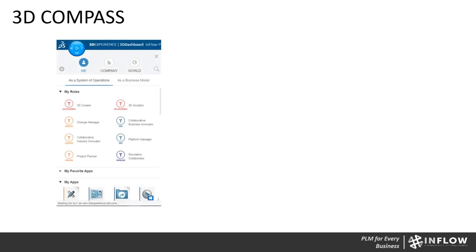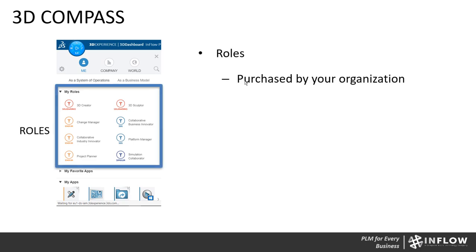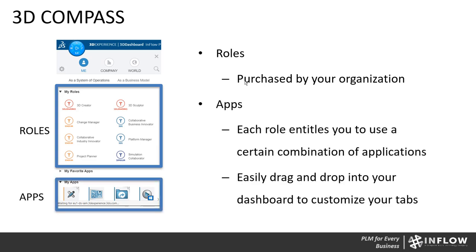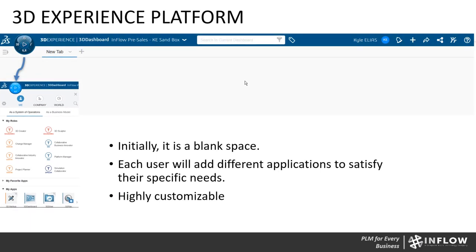I want to talk about the 3D Compass next. When you click on it — it sits in the top left-hand corner of the screen — it will show things like your roles. Your roles are what you paid for; they are a combination of applications, and each role gives you certain functionality on the cloud. Right below that are your apps. Each application solves a specific problem: some do markups, some allow you to create text, some allow you to share with others.